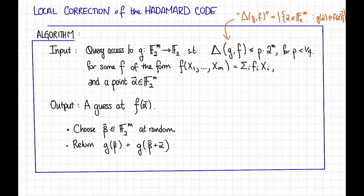That is, we're going to query g, this corrupted codeword, in two places, β and β plus α. Notice that since β is random, both of these evaluation points are randomized.